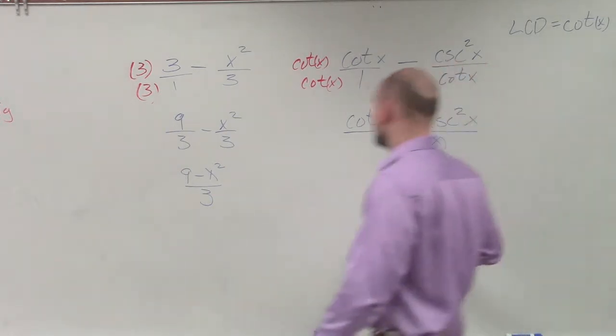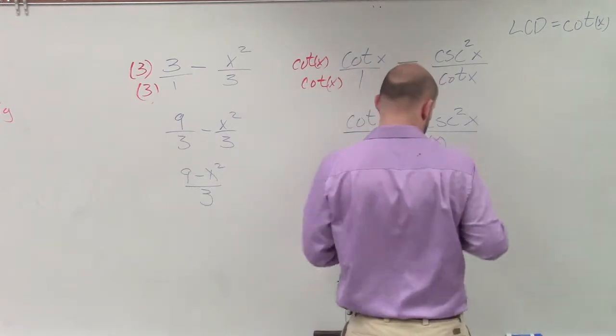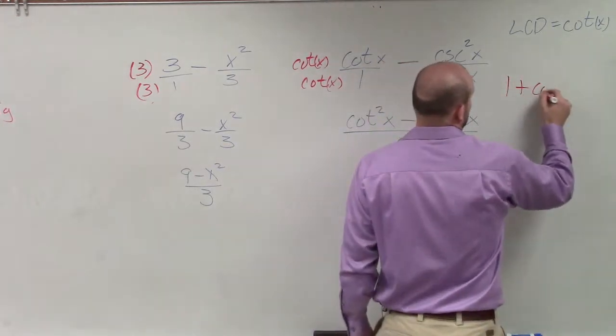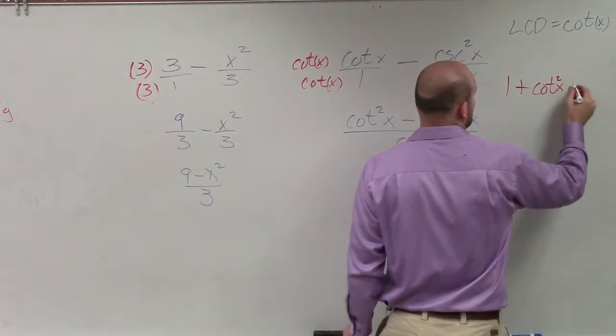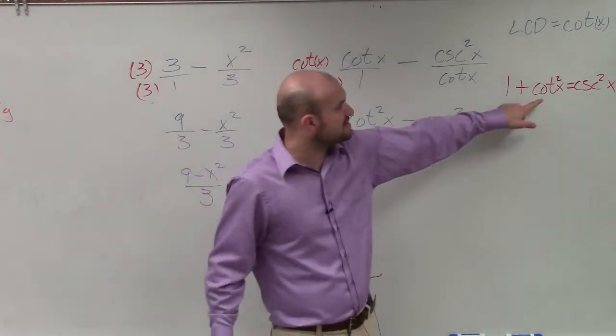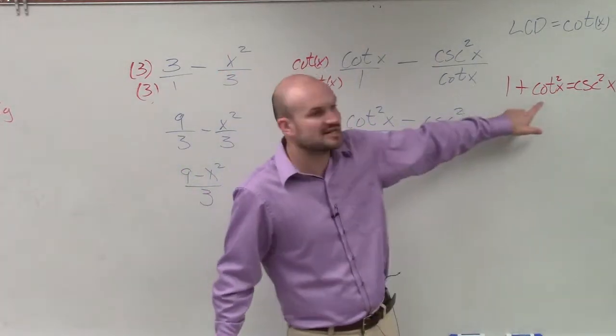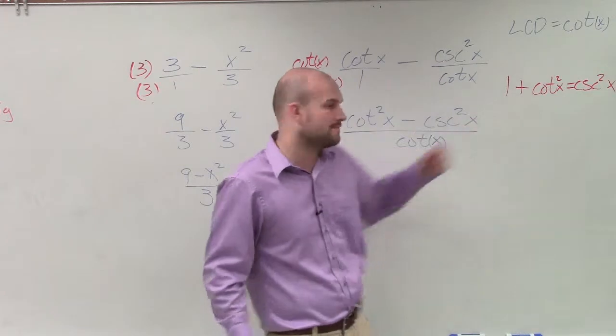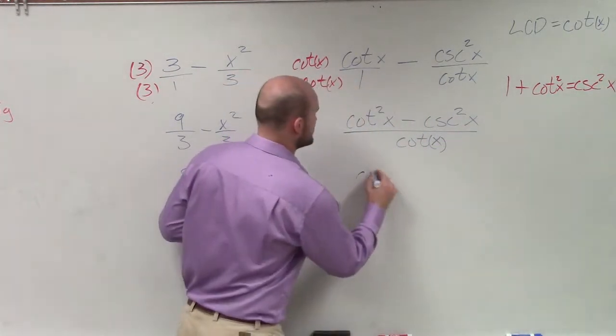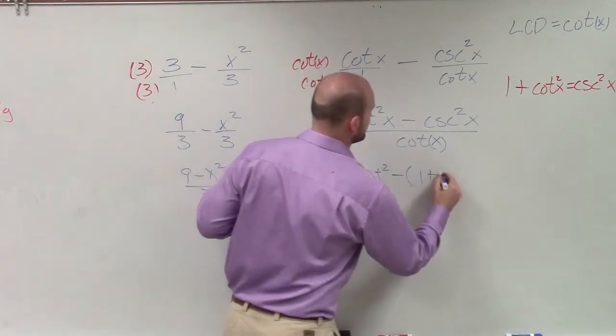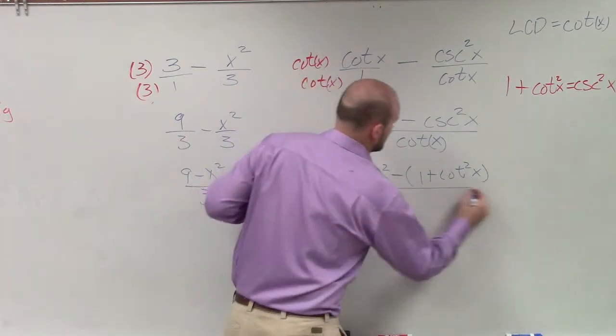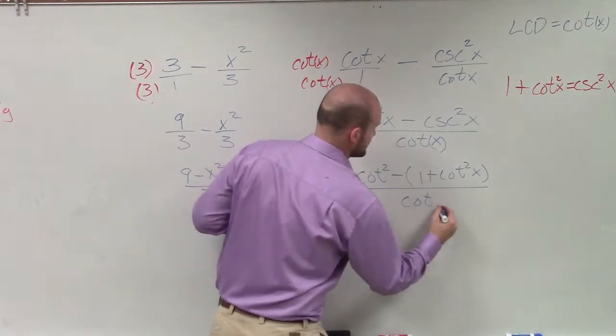So remember, the Pythagorean identity is what's right over here: 1 plus cotangent squared of x equals cosecant squared of x. So why don't I just rewrite cosecant squared of x as 1 plus cotangent? By doing that, I now have cotangent squared minus 1 plus cotangent squared of x divided by cotangent of x.